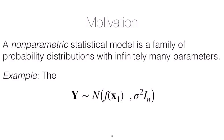Suppose we have a response that is normally distributed with some mean f of x1 and some variance-covariance matrix, but suppose that this function f is an arbitrary function — where x1 lives on some interval, say negative one to one. This could be any function on that domain. Since it is arbitrary on this interval, no finite set of parameters could specify its form.